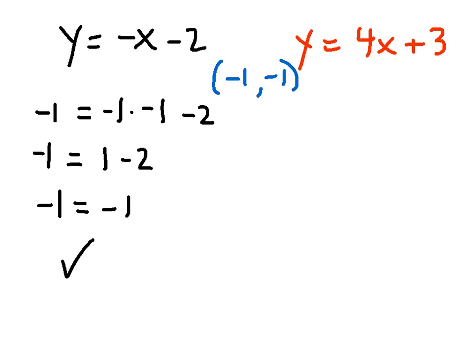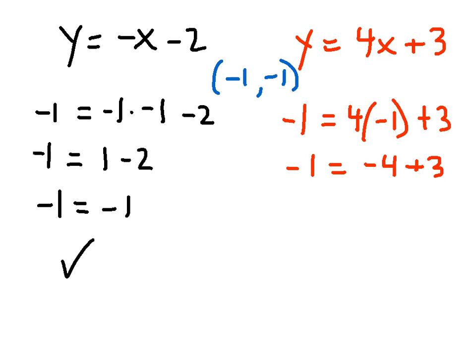Now let's check if it works in the second equation. In place of y I put negative 1, and for x I also put negative 1: negative 1 equals 4 times negative 1, plus 3. 4 times negative 1 is negative 4, and negative 4 plus 3 is negative 1. So my ordered pair checks out in the second equation as well.